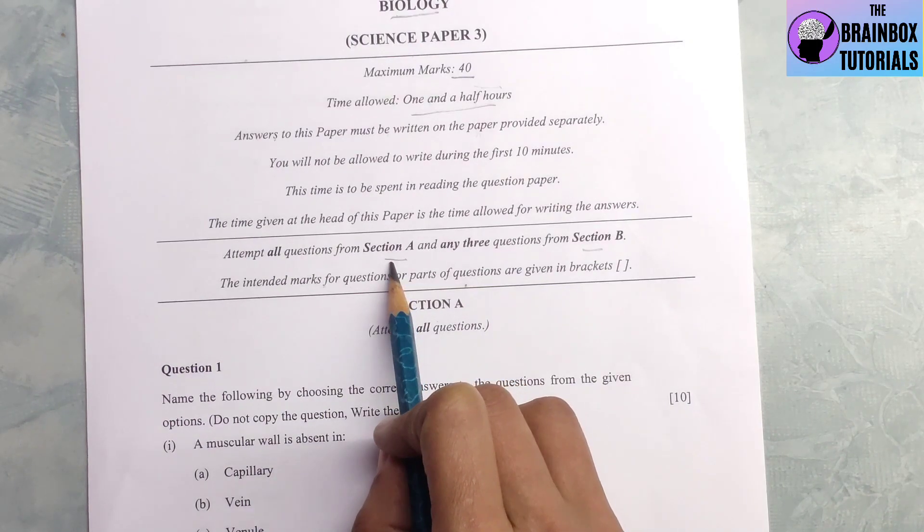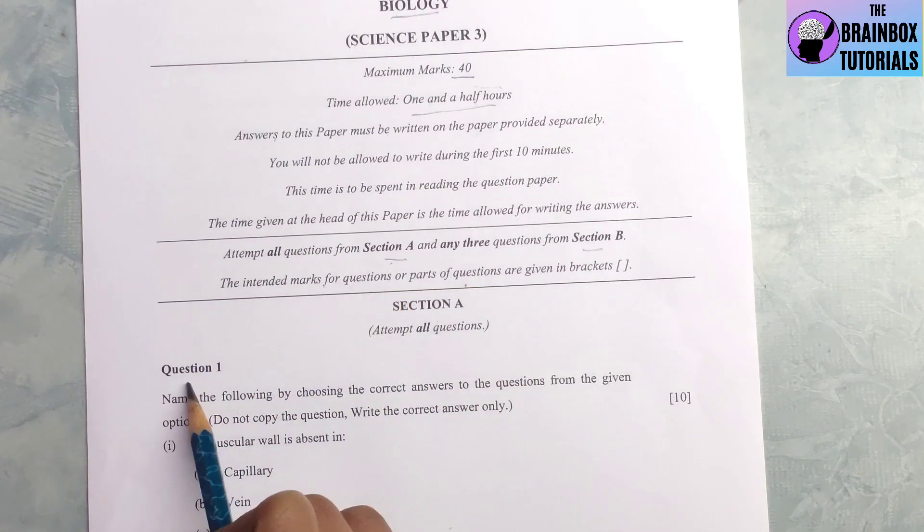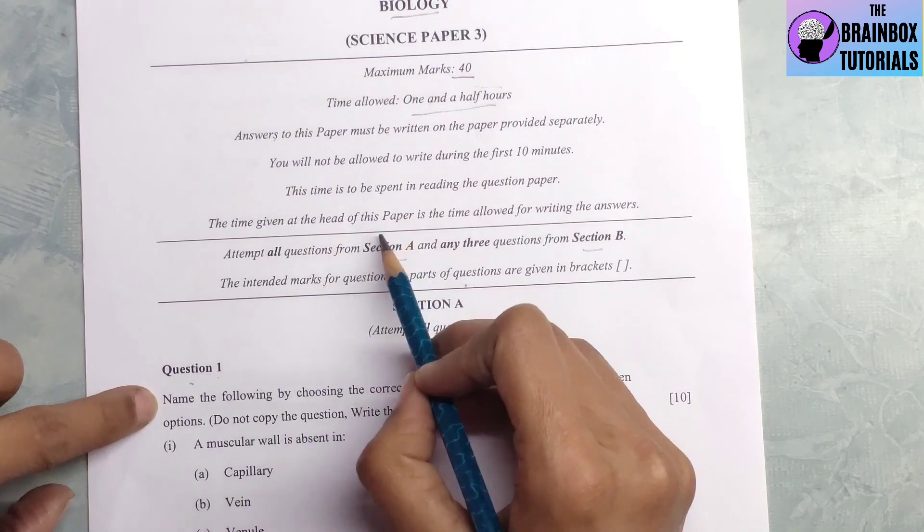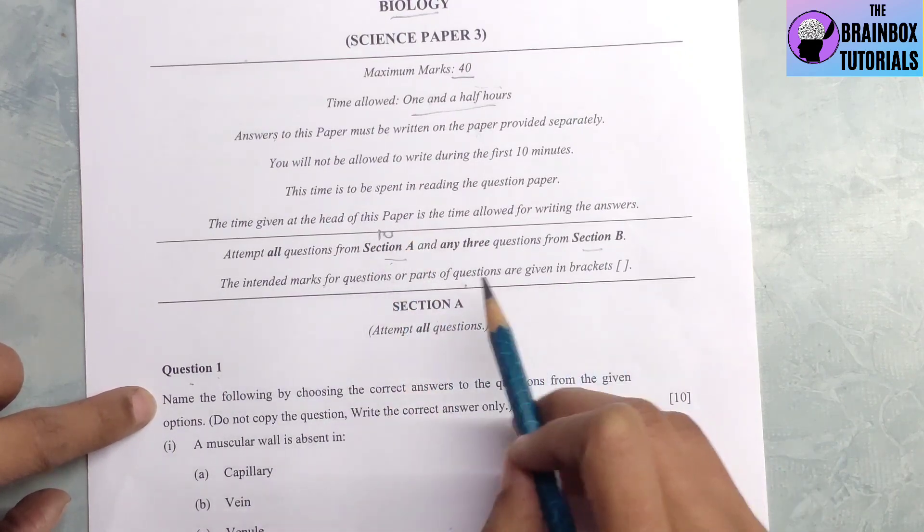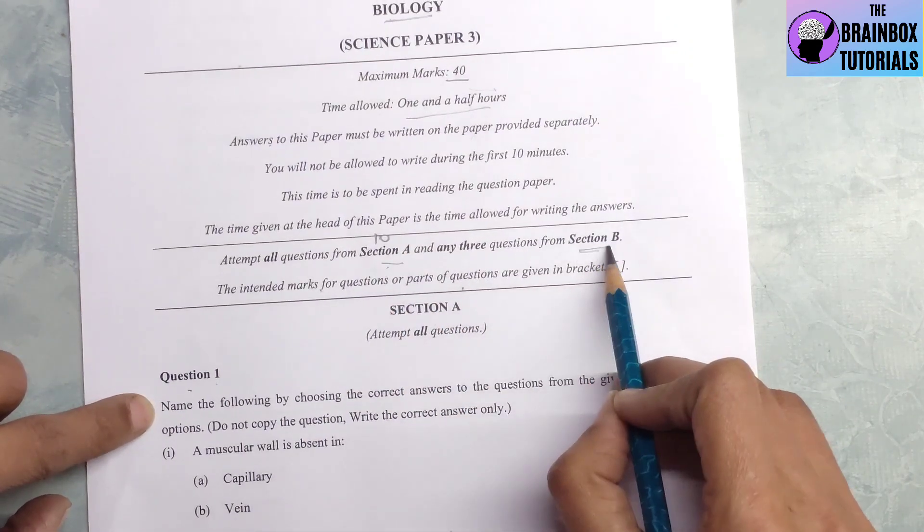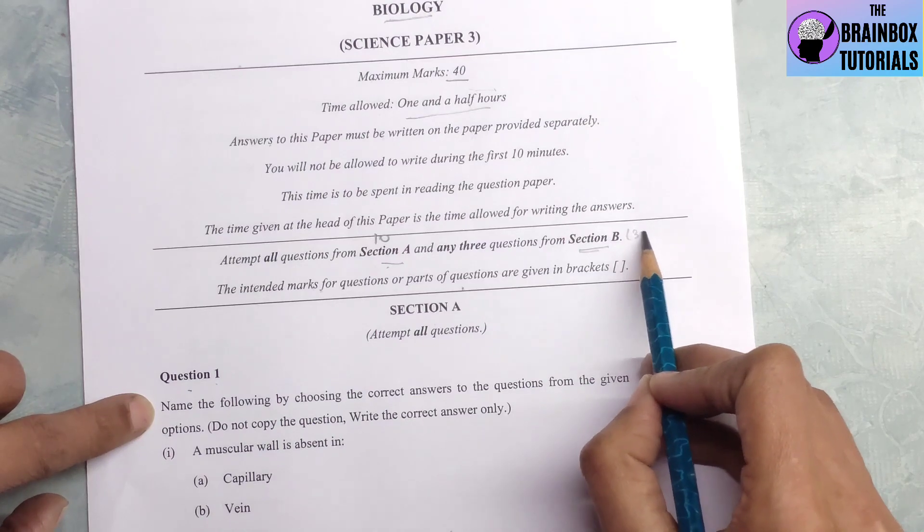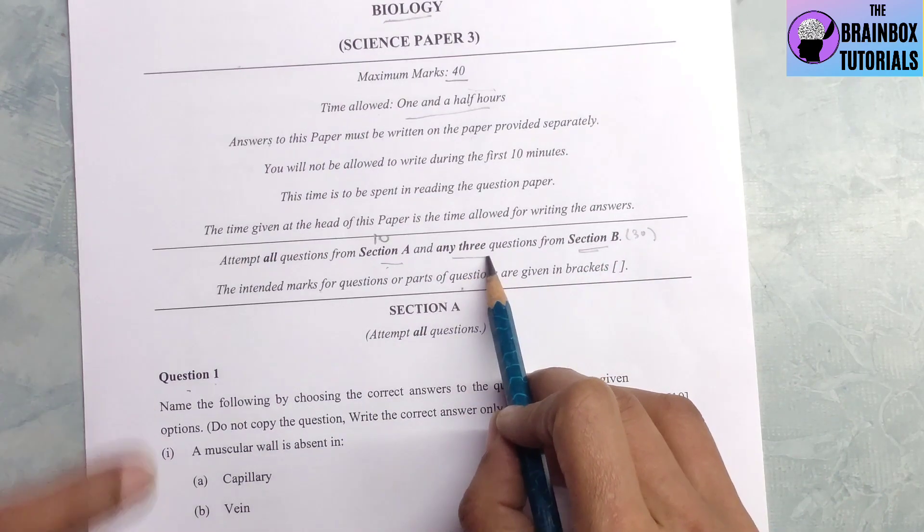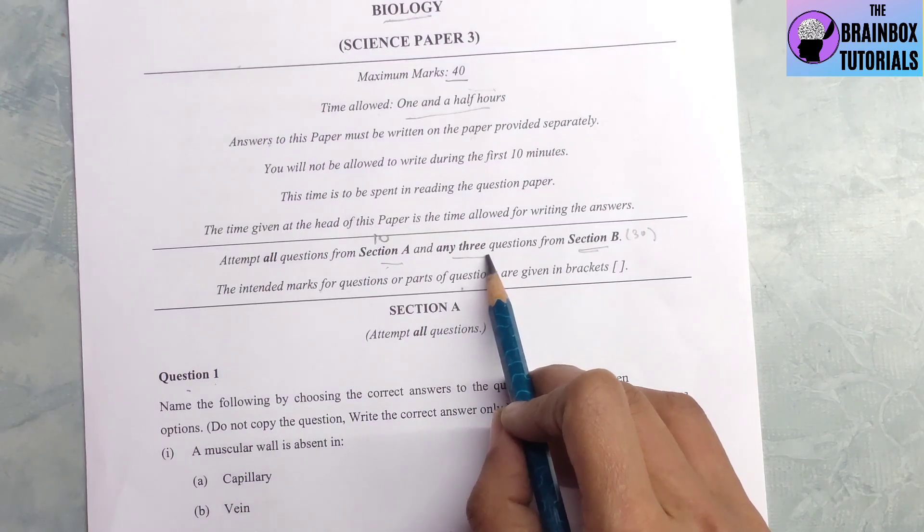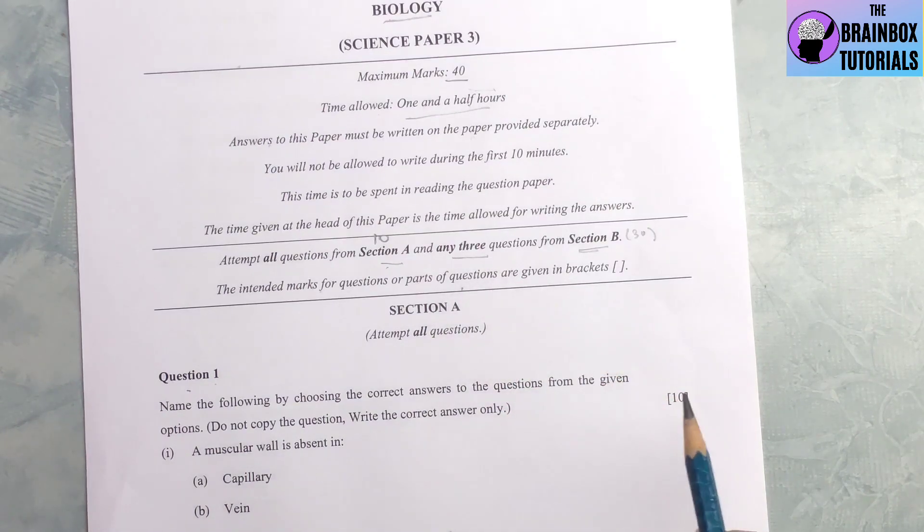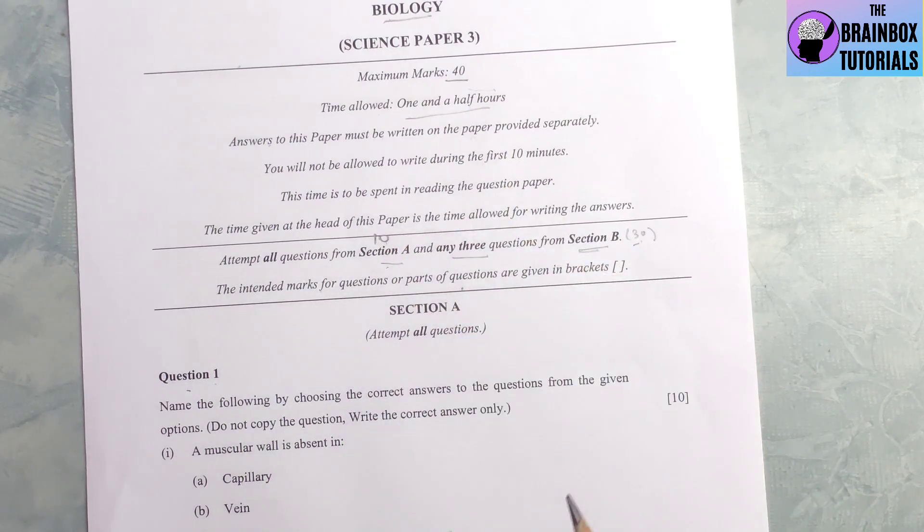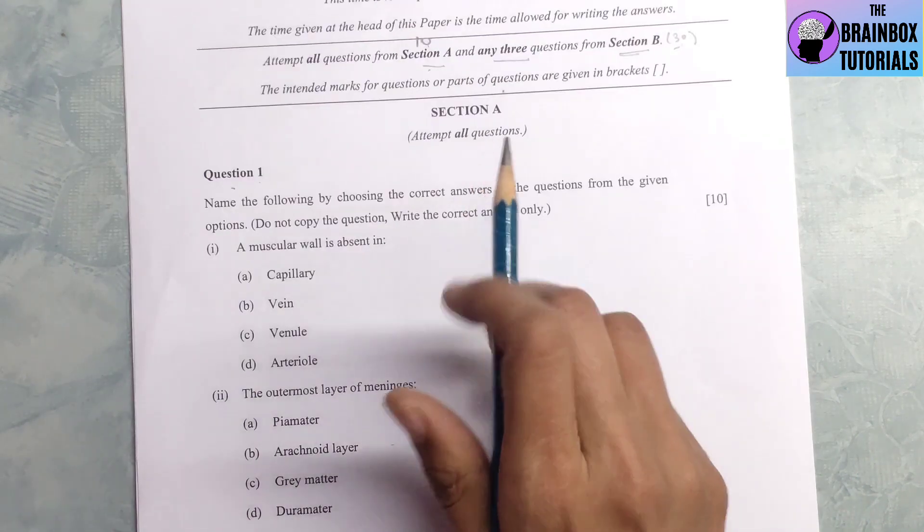In section A, you will have to attempt all the questions. Question number 1 has 10 parts of 1 mark each. So 10 into 1, section A is for 10 marks and remaining 30 marks is from section B, but there you have a choice. You will have to attempt any 3 questions out of 5 questions given for 10 marks each. So total 30 marks, 30 plus 10, 40 marks paper.